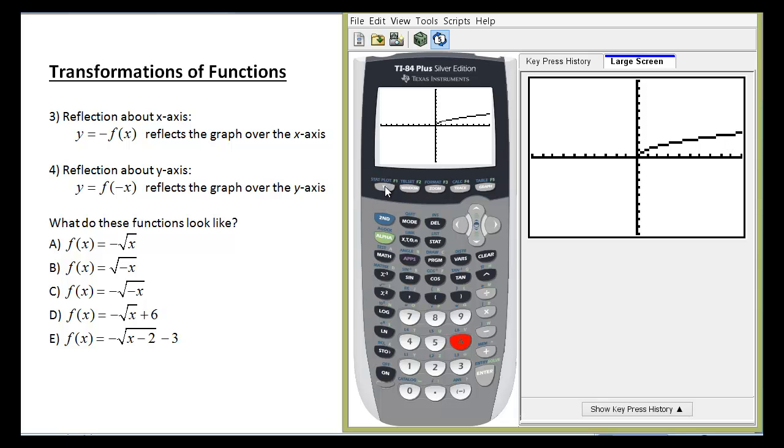That's the standard square root. But let's do problem A here, which is what happens if a negative sign is in front of the square root? If your negative appears in front of the actual function itself, it's a reflection over the x-axis. Let's go take a look at that.